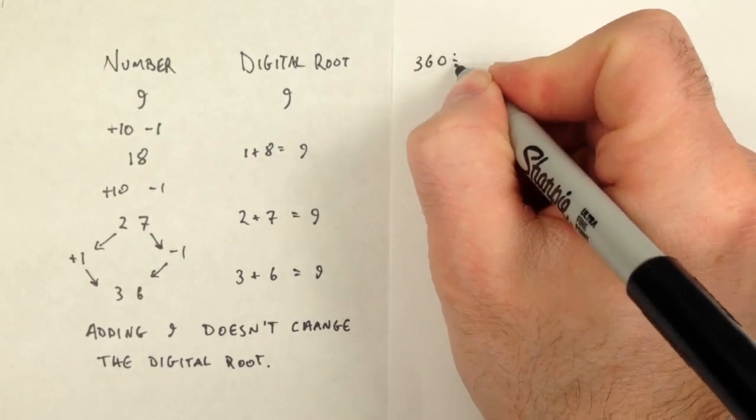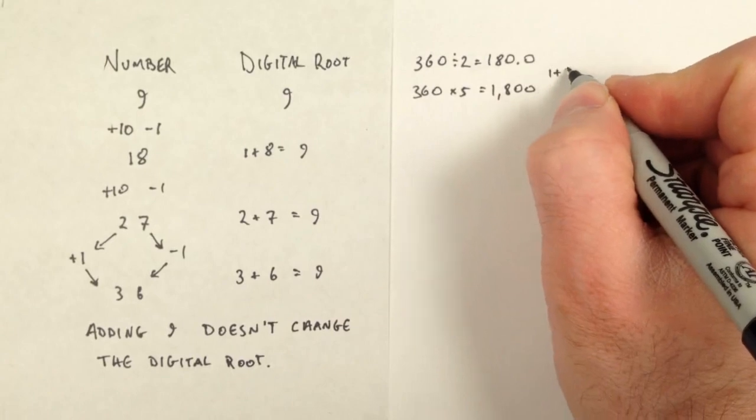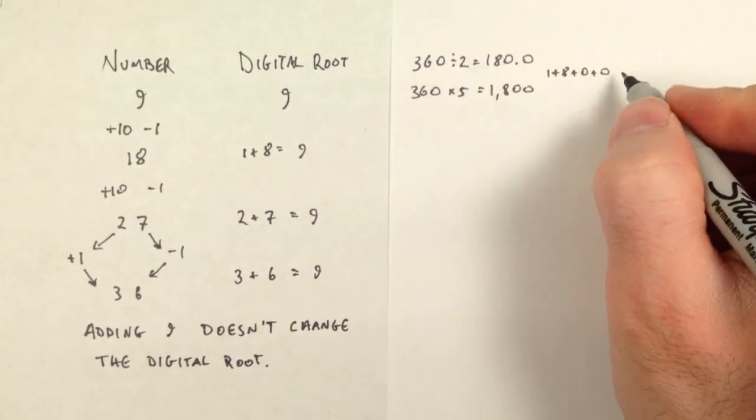360 is a multiple of 9, so its digits add to 9. But why do the quotients continue to add to 9 even after repeated division by 2?